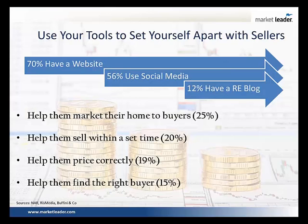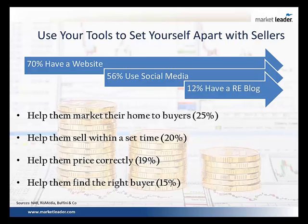I wanted to start with a few NAR stats. One that surprised me: 70% of agents have a website — why isn't it 100%? Even more interesting, 56% are using social media to brand themselves and market their listings, and only 12% are using a real estate blog. When it comes to developing your niche market and positioning yourself as the go-to agent in a specific area, the blog and driving traffic can be really important.